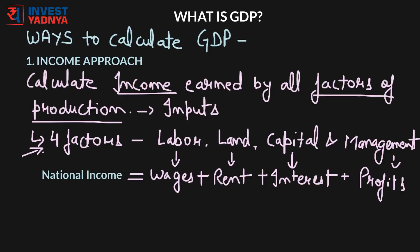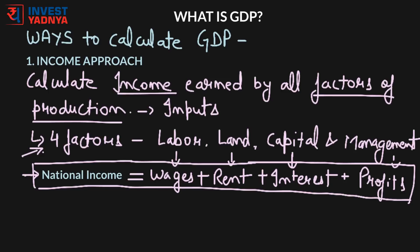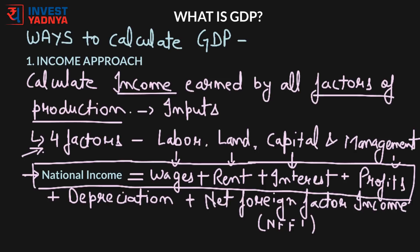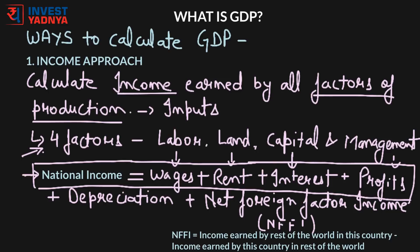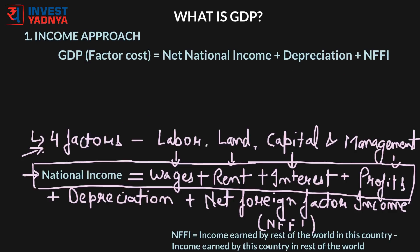The sum of all these incomes constitutes national income and is a way to calculate GDP. The formula for net national income is: wages plus rent plus interest plus profits. To make it gross we need to make two adjustments: first, add depreciation of capital, and second, add net foreign factor income (NFFI). NFFI is the income earned by the rest of the world in this country minus the income earned by the country from the rest of the world. So the GDP formula under this approach becomes: wages plus rent plus interest plus profits plus depreciation plus net foreign factor income.